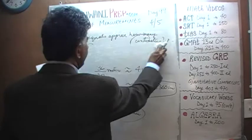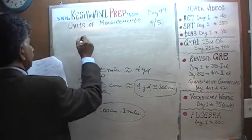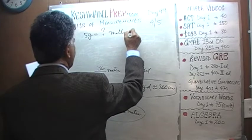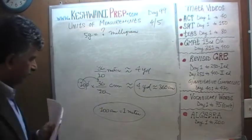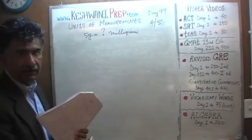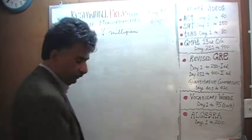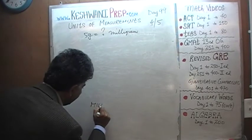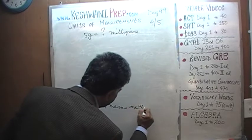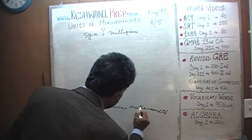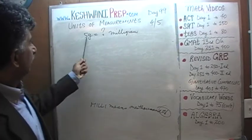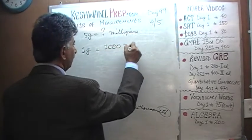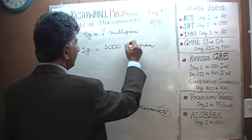Let's do one more. Five grams is approximately — well, not approximately, exactly — how many milligrams? On day number 96 when we began the series, we learned that 'milli' means one thousandth. So five grams equals how many milligrams? We know that one gram has to equal one thousand milligrams — that's why it's called milligrams.